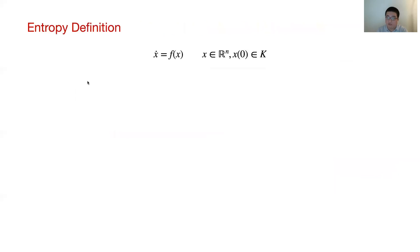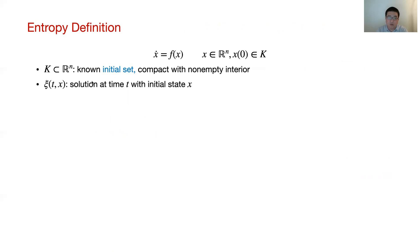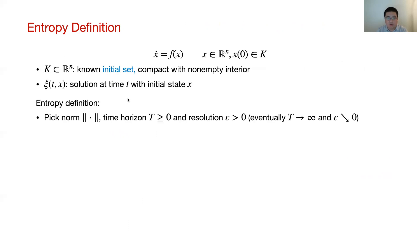I will now define topological entropy for a continuous-time autonomous system on R^n, with initial states drawn from a known compact set K with non-empty interior. We denote by t-psi the solution to this system at time t with initial state x. To define topological entropy, we first pick a norm, a positive time horizon capital T, and a positive resolution epsilon. Eventually, we let capital T go to infinity and epsilon go to zero. The value of topological entropy will be the same for all norms on R^n.